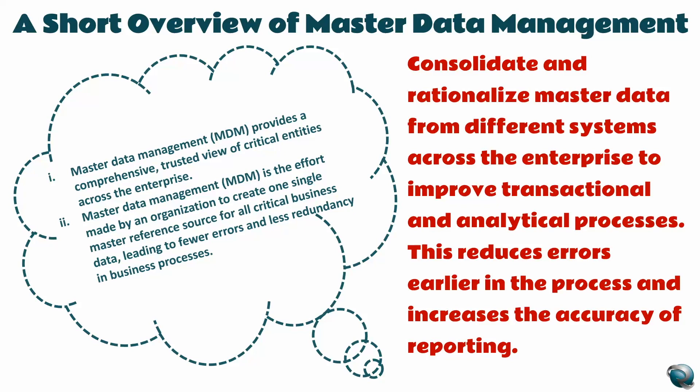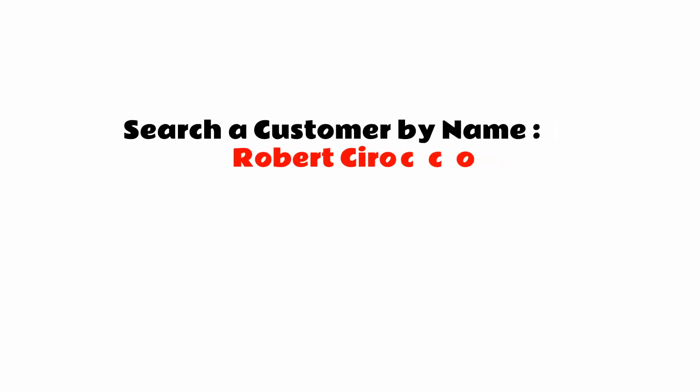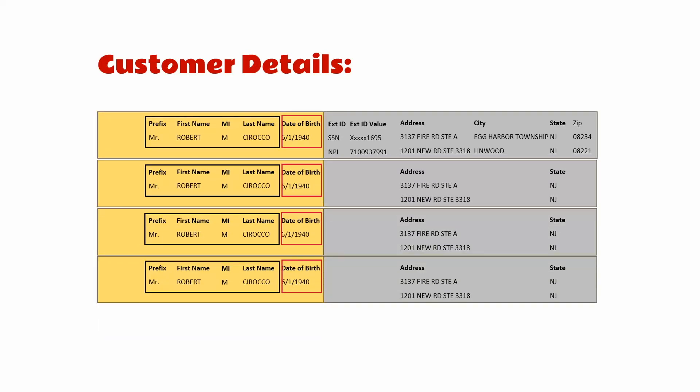I know it's a bit theoretical, so let me give a practical example. I'm searching for a customer by name Robert Siraco within my organization — it could be an e-commerce system or marketing system, it doesn't matter. I'm searching for a customer by name Robert, and the system is now bringing up customer details for Robert M. Siraco.